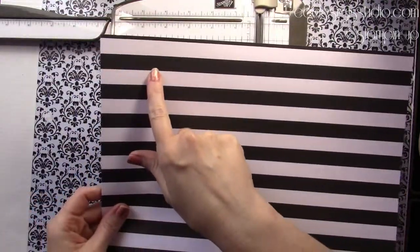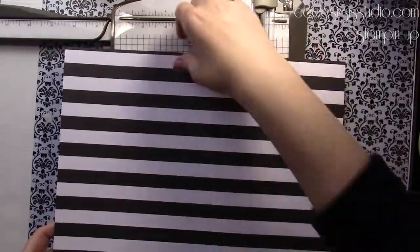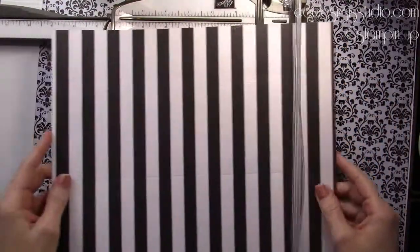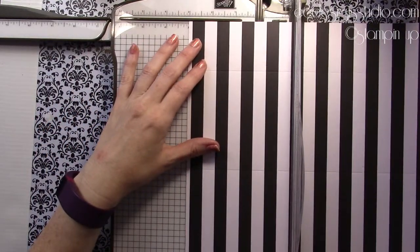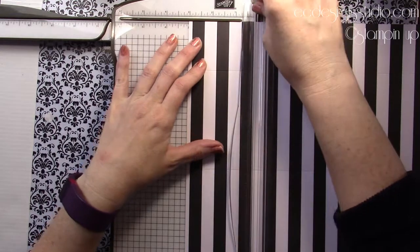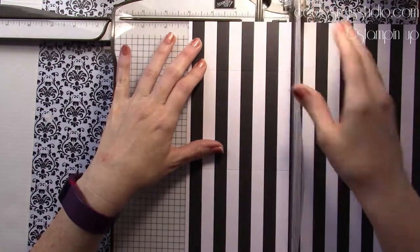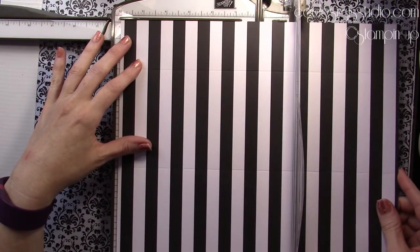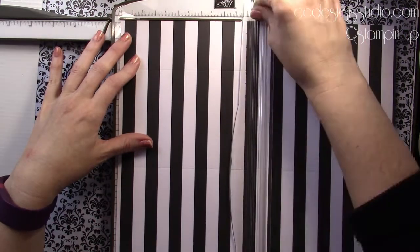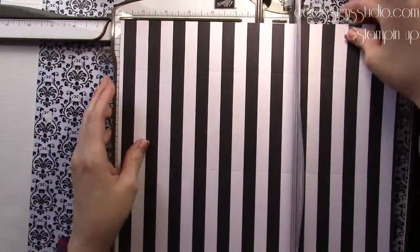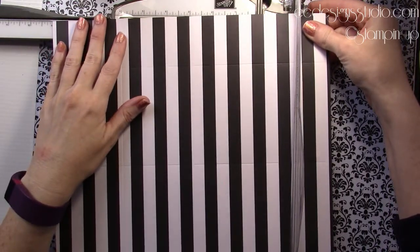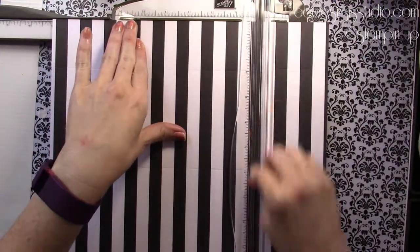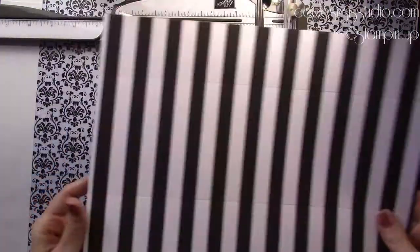And then I'm going to go all the way over to 10 and I'm going to score at 10. Line it up good. Remember to use your score tool for this. It's the lighter gray one. So I've got two, six, and 10 that I've scored on this side. Then turn it around 90 degrees. And here we're just going to score every three inches.